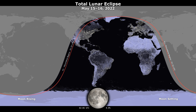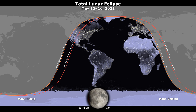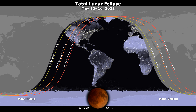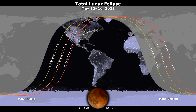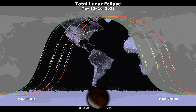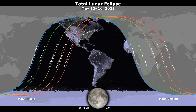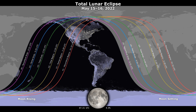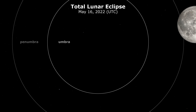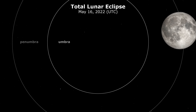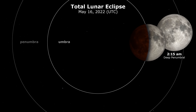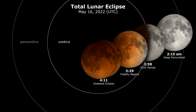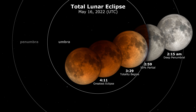This animated map is showing where the lunar eclipse is visible. Contours mark the edge of the visibility region at eclipse contact times. The Moon moves right to left, passing through the Penumbra and Umbra, leaving in its wake an eclipse diagram with the times at various stages of the eclipse.